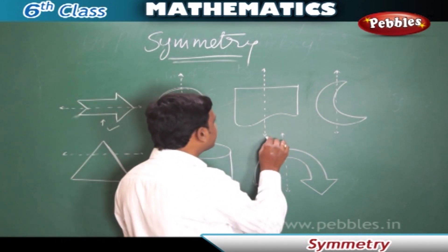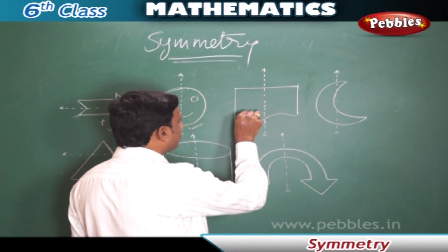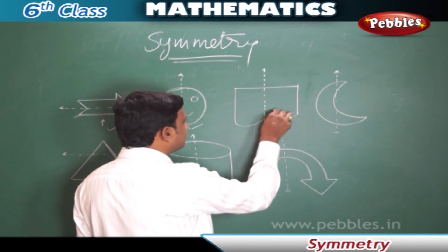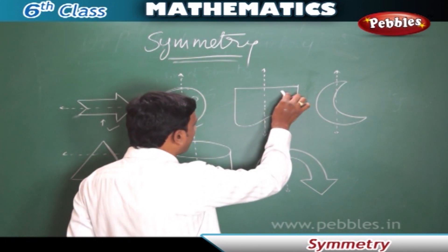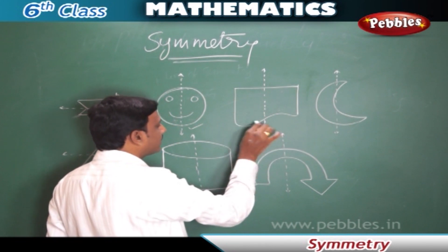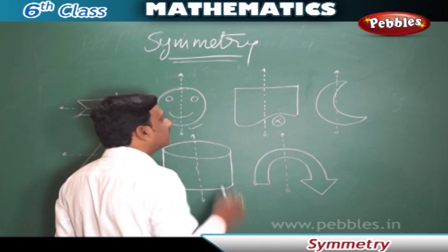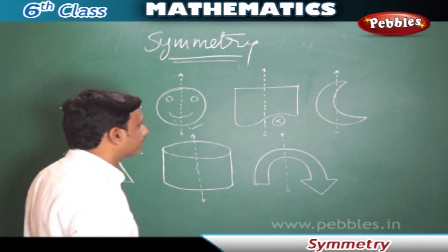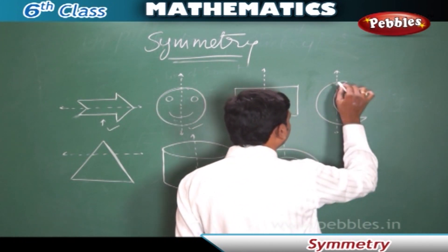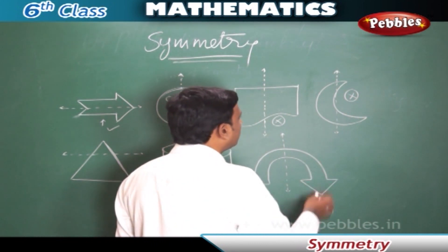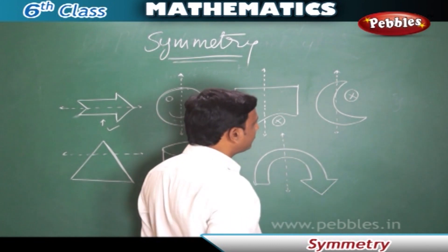In this third case, the dotted line cannot make this figure into two identical halves. If folded, this part doesn't match with that part, so this figure is not symmetric and this line is not the line of symmetry. And in the fourth figure, there is no way this dotted line makes the figure into two equal halves, so it is also not the line of symmetry.